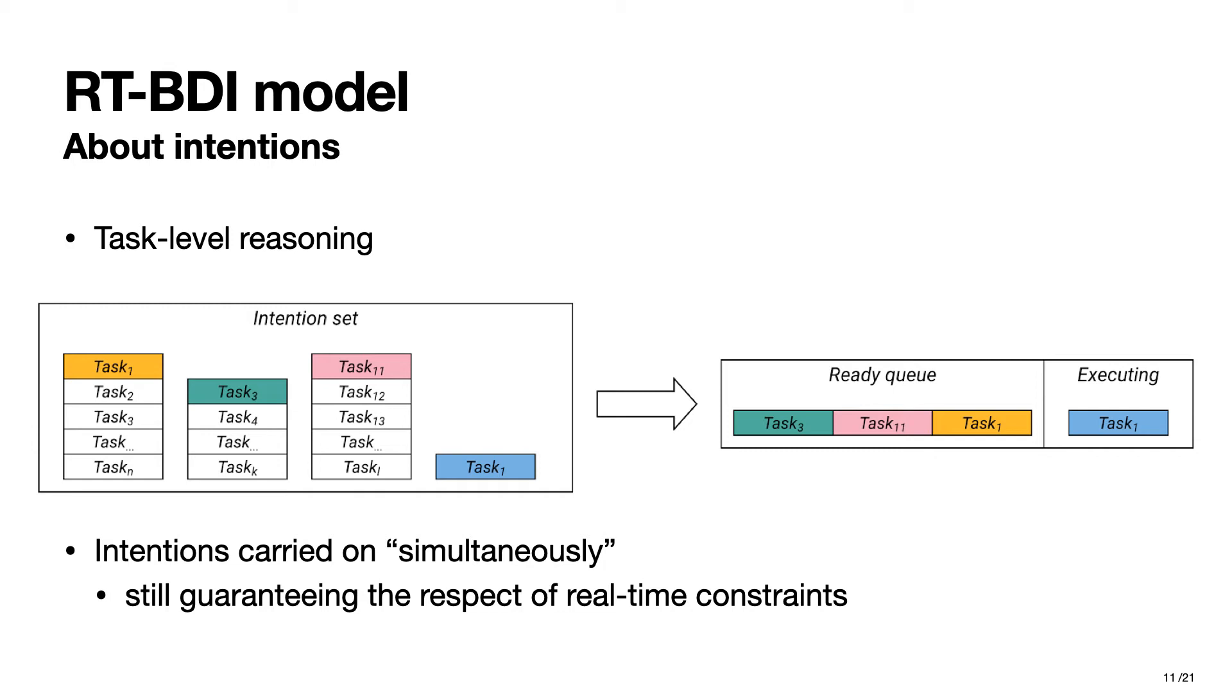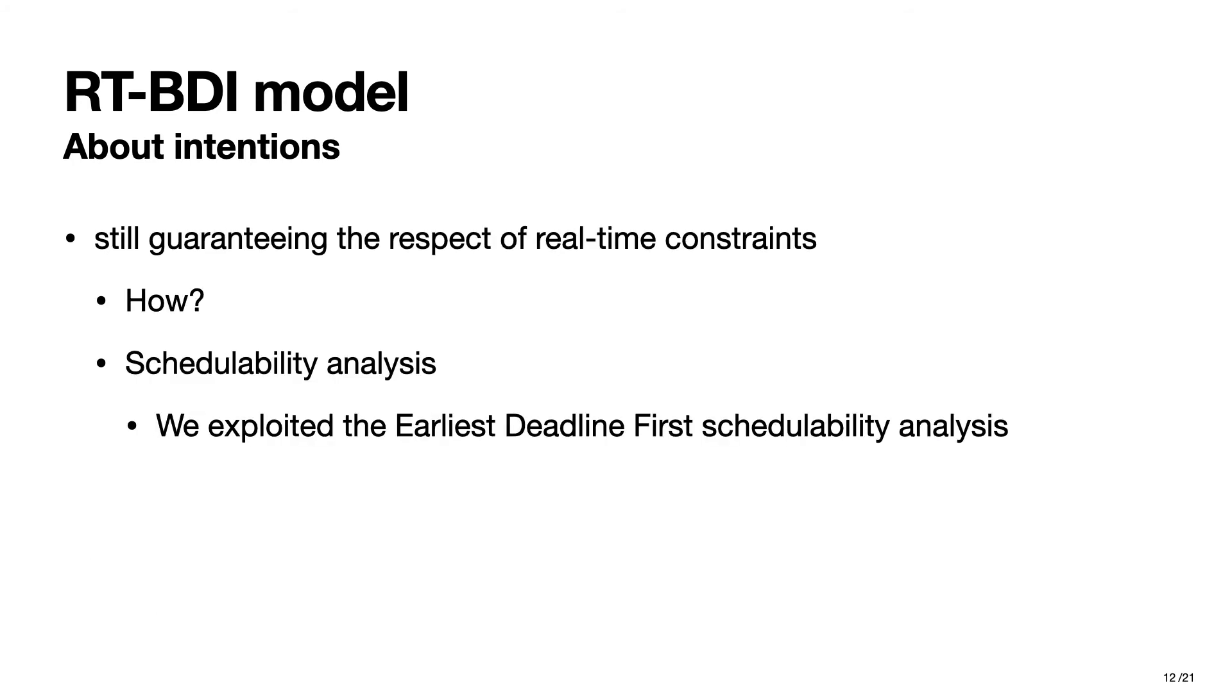This allows the agent to quickly switch from an intention to another one without incurring in any deadline miss. In order to achieve such a complex objective, the agent must perform a task-level reasoning. When deciding whether a new intention should be added to the current intention set or not, the agent must verify that all the tasks it has already committed to are still guaranteed to be completed within their deadline.